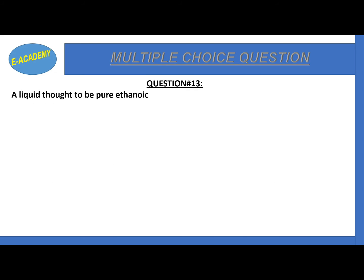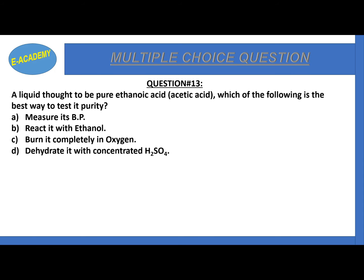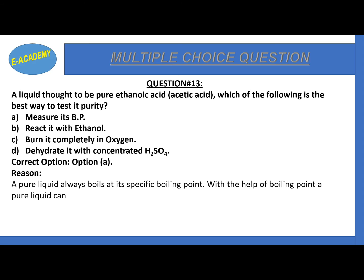Question 13. A liquid is thought to be pure ethanoic acid — ethanoic acid is another name for acetic acid. Which is the best way to test its purity? Measure its boiling point, react it with ethanol, burn it completely in oxygen, or dehydrate it with concentrated H₂SO₄. The correct option is option A: measure its boiling point. A pure liquid always boils at its specific boiling point, so the boiling point can be used to identify a pure liquid.